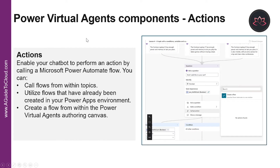What are Power Virtual Agents actions? You can enable your chat bot to perform an action by calling a Microsoft Power Automate Flow. Flows can help you automate activities or call backend systems. You can call flows from within a topic as a discrete call-to-action node, or you can utilize flows that have already been created in your Power Apps environment. Note that a flow can only be called from a topic located in the same Common Data Service environment as your chat bot. Flows must also be in a solution in Power Automate, and you can move flows into solutions so they are listed in the Authoring Canvas.